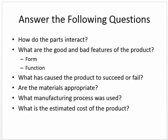We'll be able to answer the following questions when we tear it apart — these are the things we're trying to get done, not necessarily in this order. First, how do the parts interact? Second, what are the good and bad features of this product? We're going to talk about the form and the function. The form is the 3D aspect — the length, depth, and height. The function is how well it works.